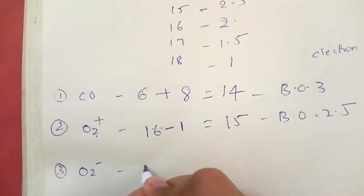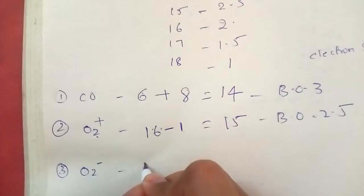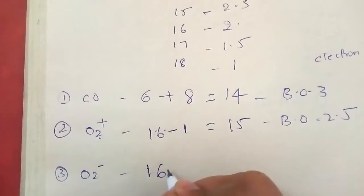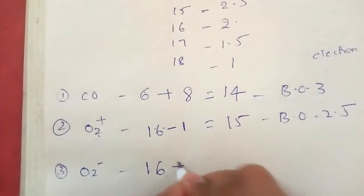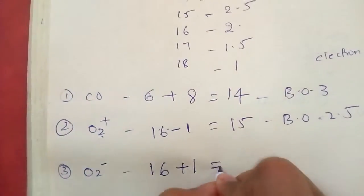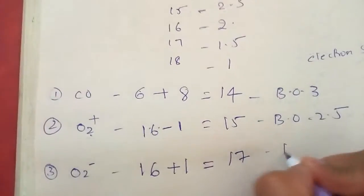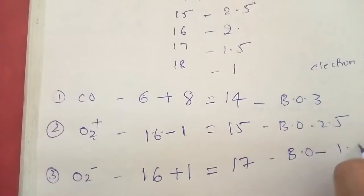O2 minus. O2 minus 16, O2. If 1 electron has added, then 16 plus 1, that is equal to 17. This bond order became 1.5.